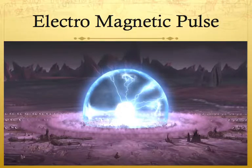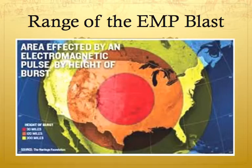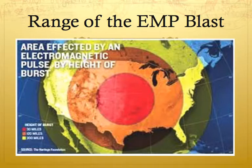Now we are going to study some of the features of an EMP. First, the EMP's range. The range of an EMP is 40 to 400 km — which is impressive, if we ignore the fact that it is clearly dangerous.